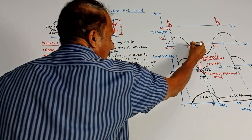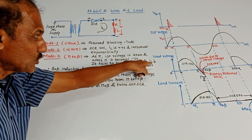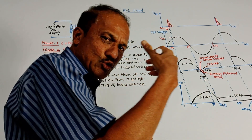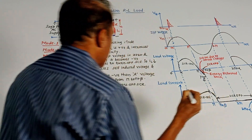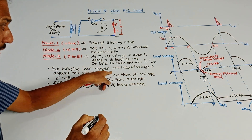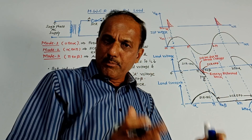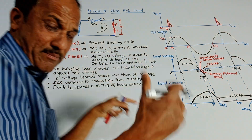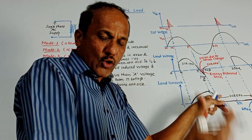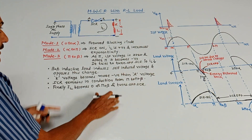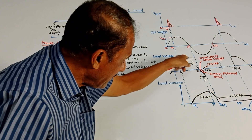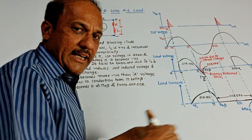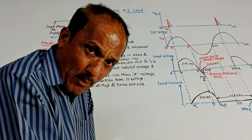After pi, input voltage becomes negative and tries to turn off SCR, so load current IL starts to reduce. Since the supply voltage is negative, it is trying to switch off the SCR and this load current tries to reduce. But the inductive load induces a self-induced voltage — an important property of the inductor is to store energy and produce induced voltage — and it opposes this change, opposing the reduction of load current. Between alpha and pi, when SCR was in conduction mode, the inductor was storing energy.